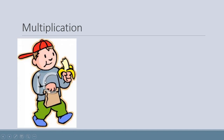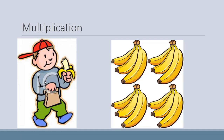Usman has four bunches of bananas — how many bunches? Four bunches. And in each bunch there are three bananas — how many bananas? Three bananas. So how many total bananas does Usman have?